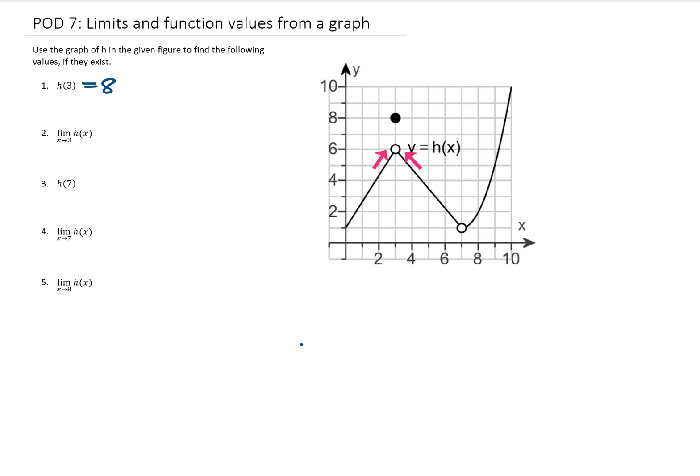Well it looks to me that from either direction, either left of 3 or right of 3, as we walk towards x equals 3, our y value approaches 6. So our limit of this function as x approaches 3 equals 6.